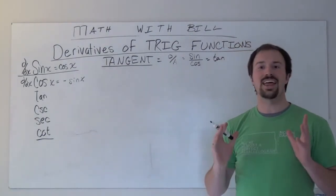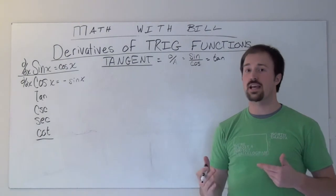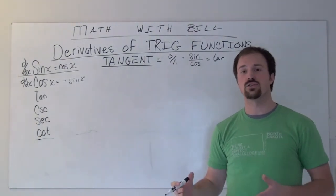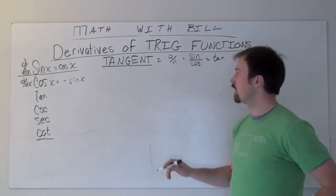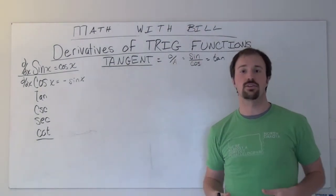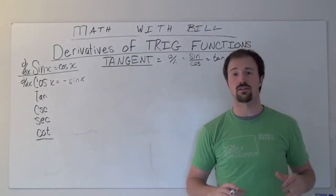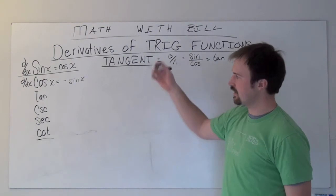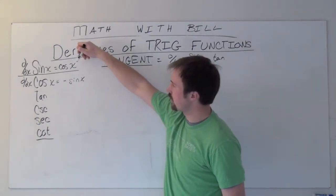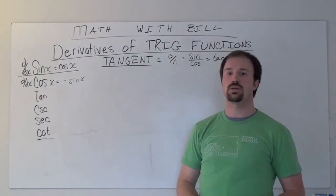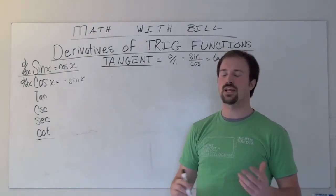We're going to use that and some previous calculus rules that you already know to help get to the derivative here of tangent. We're going to do this because the limit definition is entirely too long. Since we've already established what the derivative of sine and cosine is, this process becomes a little bit easier.